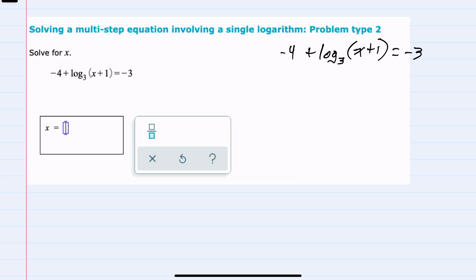I've rewritten the equation here that we are asked to solve for x, and to start, I would like to isolate this logarithm by adding 4 to both sides of the equation.